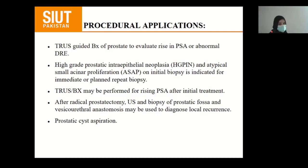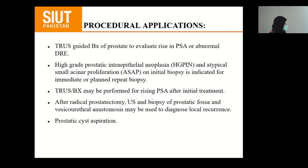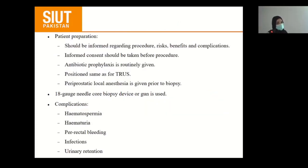Procedure applications for transrectal ultrasound: transrectal guided biopsy of the prostate to evaluate a rise in PSA or abnormal DRE, high-grade prostatic intraepithelial neoplasia, and atypical small acinar cell proliferation. Initial biopsy is indicated for immediate or planned repeat transrectal ultrasound biopsy. Salvage biopsy may be performed for rising PSA after initial treatment, after radical prostatectomy, to diagnose local recurrence, and for prostatic cyst aspiration. The patient should be informed regarding the procedure, risks, benefits, and complications. Informed consent should be taken. Antibiotic prophylaxis is routinely given. Periprostatic local anesthesia is given prior to biopsy. An 18-gauge needle core biopsy is advised. Complications of TRUS-guided biopsy include haematospermia, hematuria, rectal bleeding, infection, and urinary retention, which can be treated accordingly.